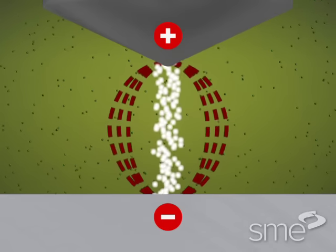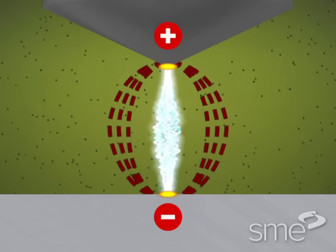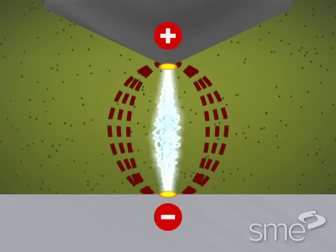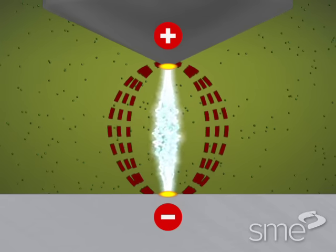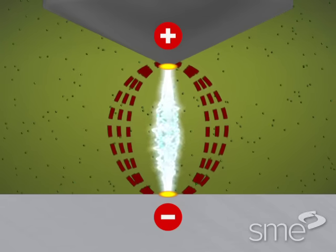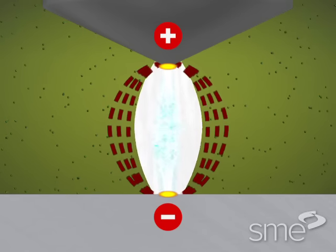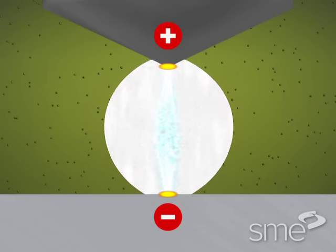Generating a spark, a small amount of material melts and vaporizes from the electrode and workpiece at the points of spark contact. A bubble composed of the gaseous byproducts of vaporization rapidly expands outward from the spark channel.